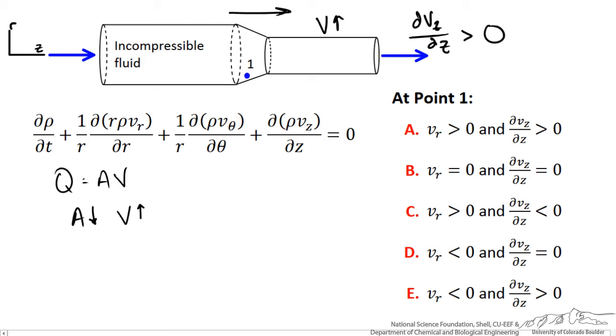Now using the mass continuity equation, the radial velocity must also change. We could cross out certain terms. For instance, we could assume that it is axisymmetric, that we have no v theta, and we have no change in density with time. So what we are left with in this picture for an incompressible fluid is the following relationship.